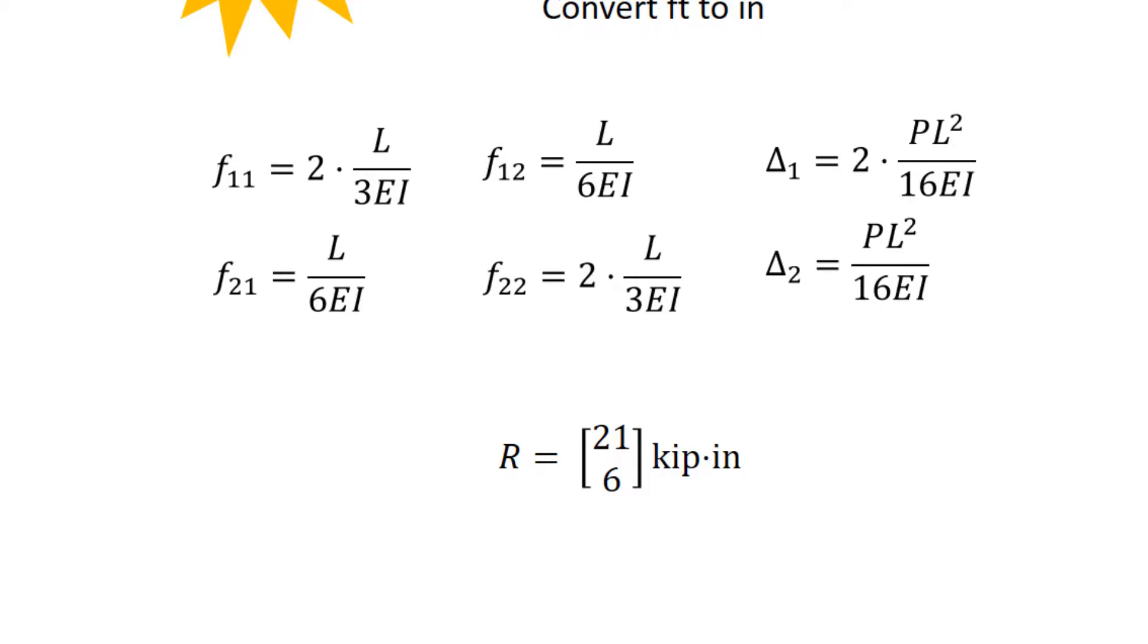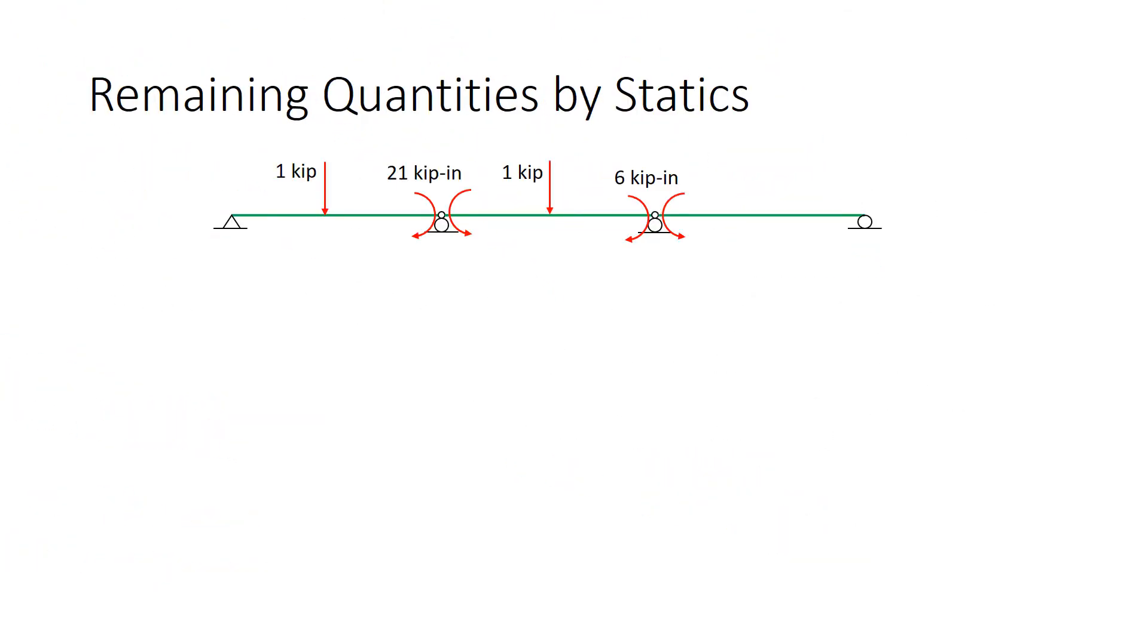Let's finish the problem by interpreting physically what that means. The remaining quantities we will find simply by standard statics. What I'm showing on this diagram is the primary structure with the applied load and with the redundant moments. But now using the known values of the redundant moments. And what we need to do is separate out each of these different segments. So for instance, the left-hand segment looks as follows. We have the applied load of 1 kip, the moment of 21 kip inches, and two unknown vertical forces at the two ends. The center segment looks as follows. The 1 kip force, the 2 moments on either side of the beam, and two different unknown vertical forces. The right-hand segment looks as follows. The single moment of 6 kip inches, and an unknown pair of forces.